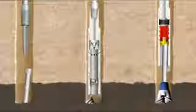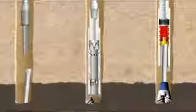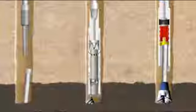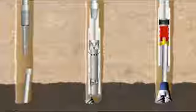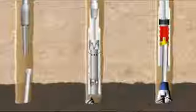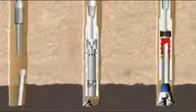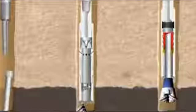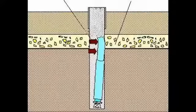The drill string is then reinserted with a set of jars or devices that deliver sharp blows. Once in place, the jars are activated, sometimes repeatedly delivering downward hammer blows to the stuck pipe. In most cases, this approach is successful and the stuck pipe can be quickly dislodged and recovered.